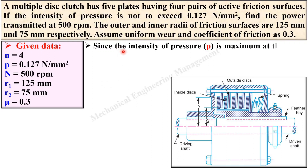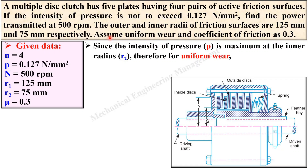We have discussed that the maximum intensity of pressure is given, so you should assume uniform wear theory. For uniform wear theory, pressure is maximum at radius r2, and so p × r2 = constant. Keep in mind: if it is uniform wear theory, then p × r2 = constant. This is the formula.